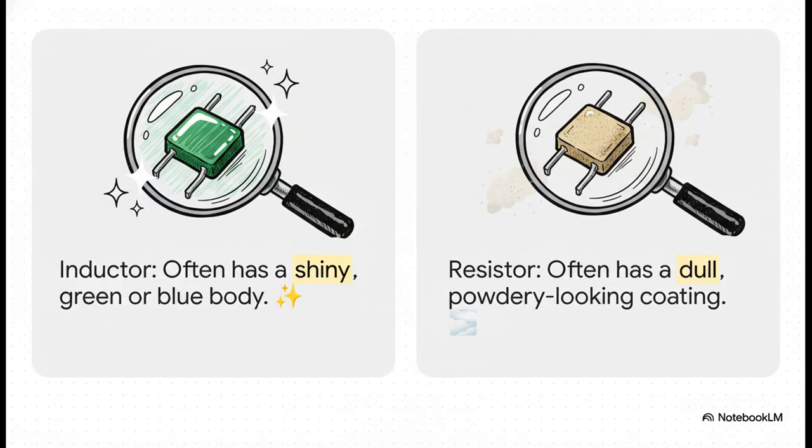Now, here's a super handy tip if you're ever looking at a circuit board. Inductors can look a lot like resistors, but here's the trick. Inductors usually have this glossy, shiny coating, while resistors tend to look more dull, almost powdery. A neat little way to tell them apart.